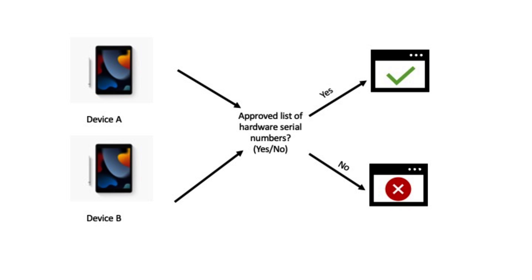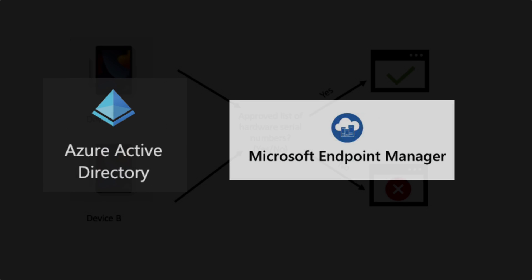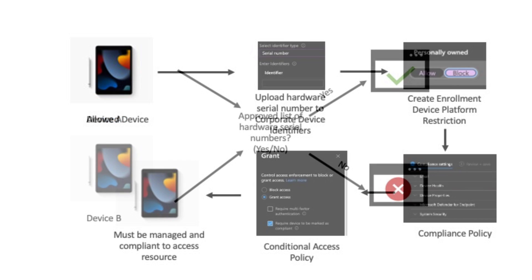I released a video last week on device compliance and the importance of that when governing access to corporate apps and resources. I got some good comments and it made me start to think: what if there's a requirement that you only want to allow specific hardware-level devices to be able to access a corporate app or resource? And if you're not on that allow list, then block access. This is possible with Azure Active Directory Conditional Access and Microsoft Endpoint Manager.